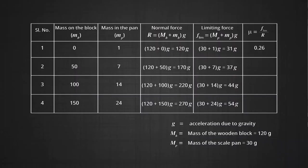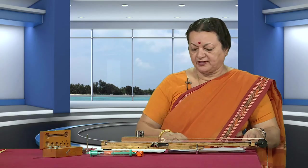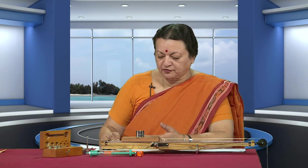Now, with these readings, find and fill up the last column for the coefficient of friction, which you obtain by dividing the force of friction by the normal force. In each of the cases, your value is coming out to be approximately 0.2. Find an average or mean value. Notice there will be no unit — you are finding the ratio of both forces, and since the force of friction and the normal force both have units of Newtons, they cancel out.